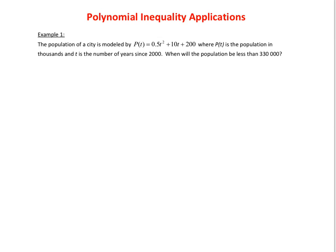Okay, so in this question, it says the population of a city is modeled by this equation, p at t. Notice it's a quadratic, where p at t is the population in thousands, and t is the number of years since 2000. And it's asking, when will the population be less than 330,000?